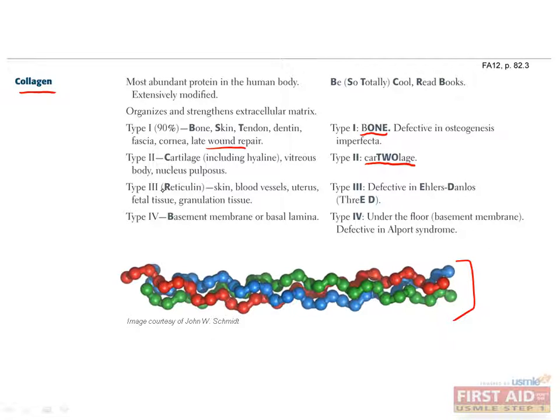Type 3 collagen is also known as reticulin and is found in the skin, blood vessels, the uterus, fetal tissue, and granulation tissue. Lastly, type 4 collagen is found in the basement membranes or the basal lamina, which you can remember using the mnemonic type four under the floor. Can you think of some places in the body where basement membranes are found? Important ones are the glomeruli of the kidney and the capsule of the lens. We'll talk more about that in a minute when we go through the diseases listed here in more detail.